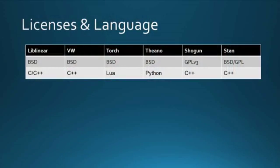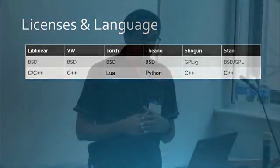Some quick properties of the projects: most of the projects are based on BSD, which is a more friendly license. Shogun is the only one based entirely on GPL. With Stan, it's a bit of a mix — their core is implemented with BSD license, but some of the interfaces are done under GPL. So it's a bit tricky.